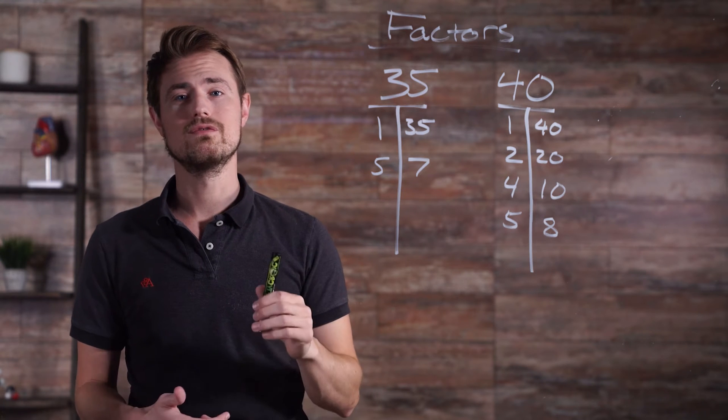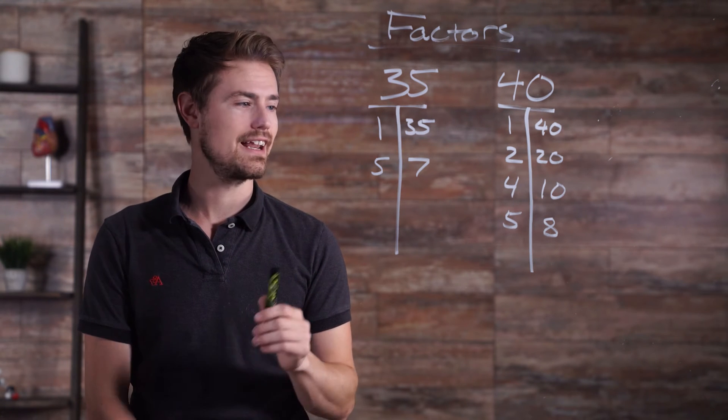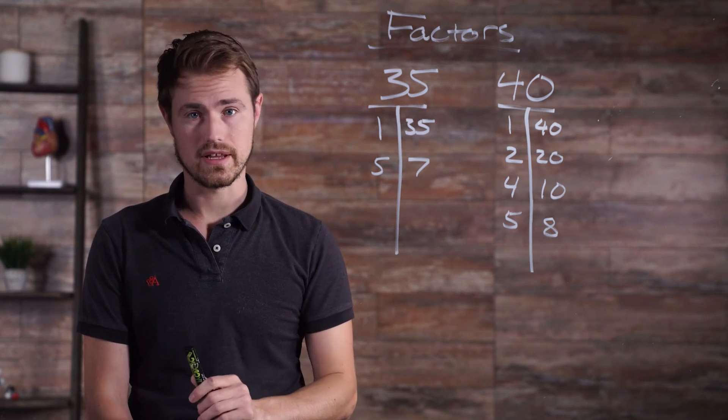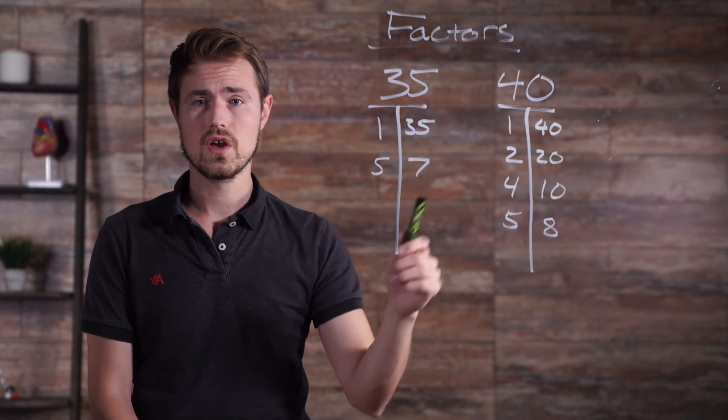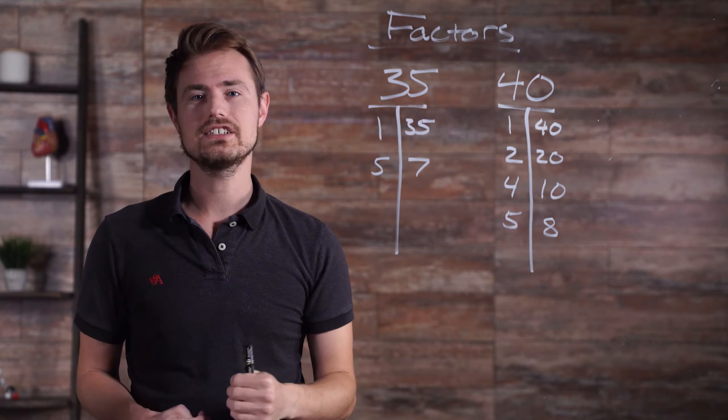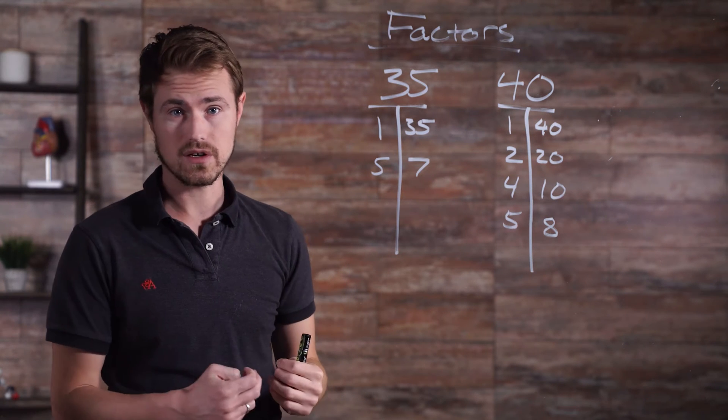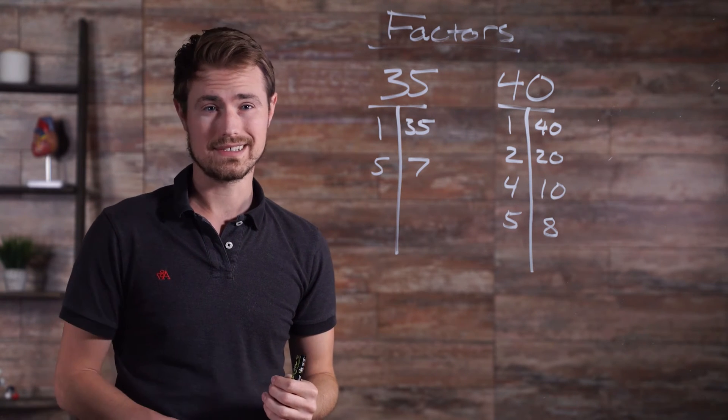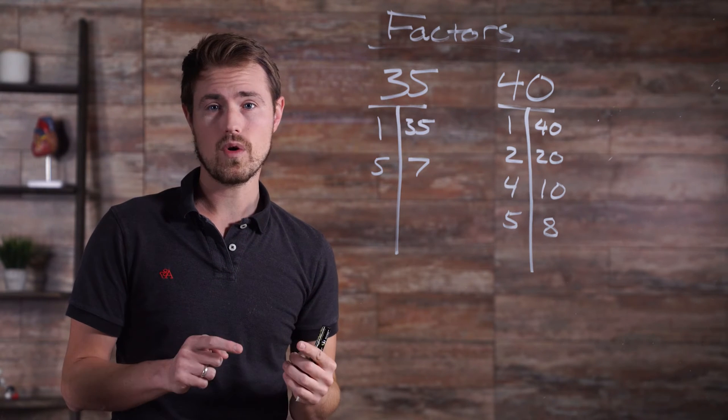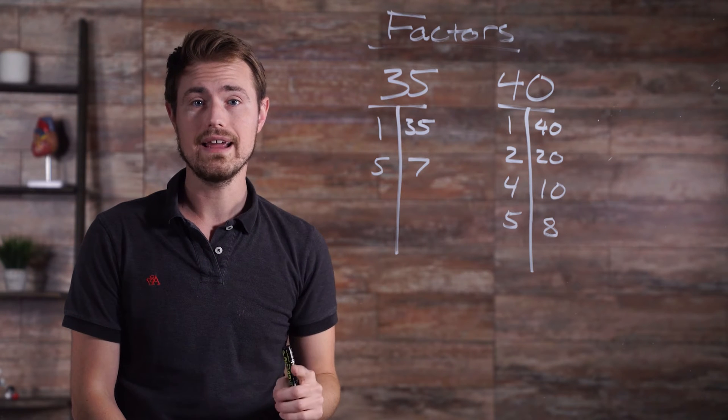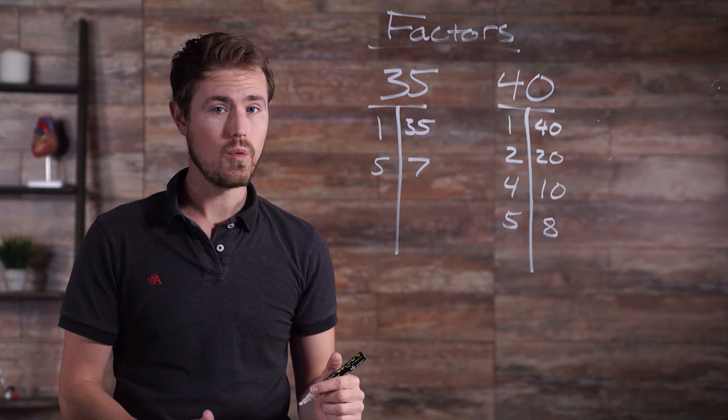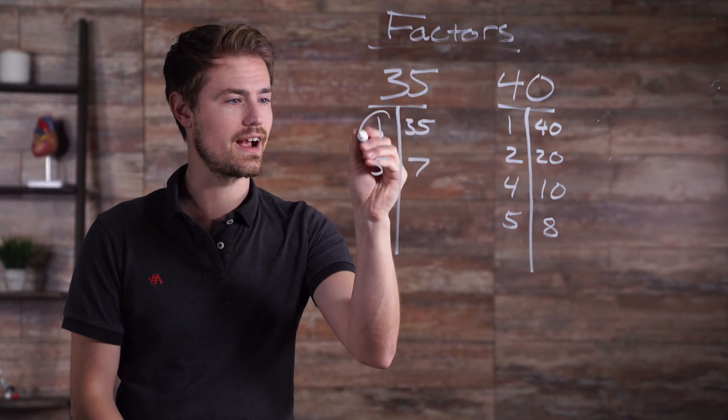Our factors for 40 are 1, 2, 4, 5, 8, 10, 20, and 40. To determine the common factors between 35 and 40, we just need to look at each list of factors for each number and determine which ones are the same. So in the case of 35 and 40, the only factors that they share between these two lists are 1 and 5. So 1 and 5 are the common factors.